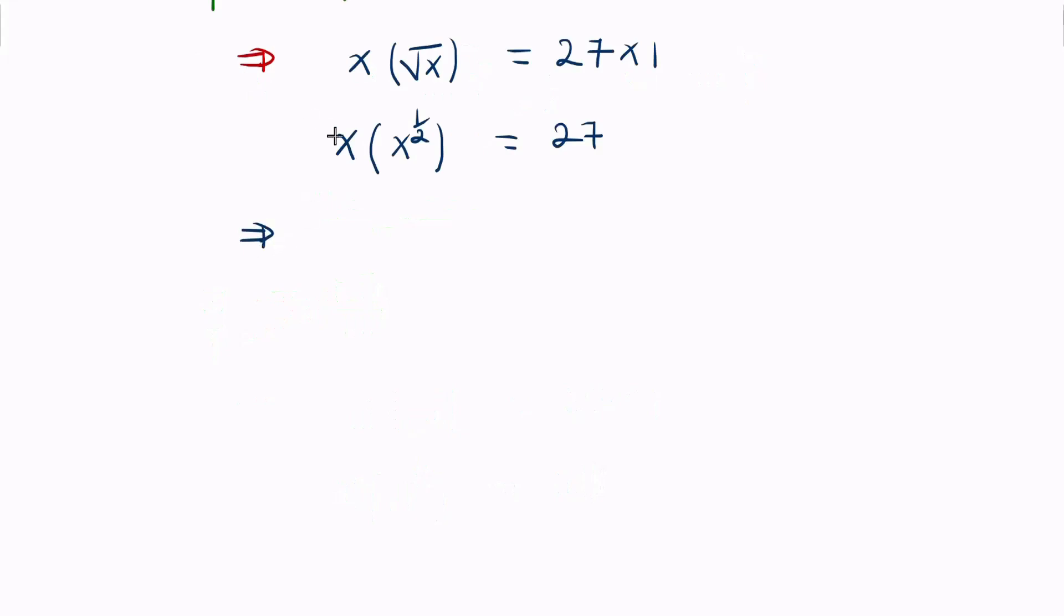This implies that we have x, and this x has power 1. We're going to treat this x as the base, and when we're multiplying indices where the bases are the same, we add the powers.